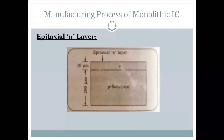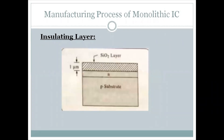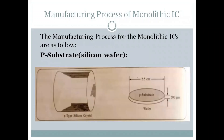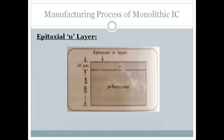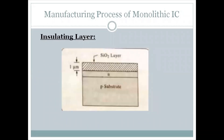This is the second step of the integrated circuit manufacturing. The next step is the insulating layer. Above the P-substrate and epitaxial layer, we grow an SiO2 layer. This SiO2 insulating layer is 1 micrometer in thickness.